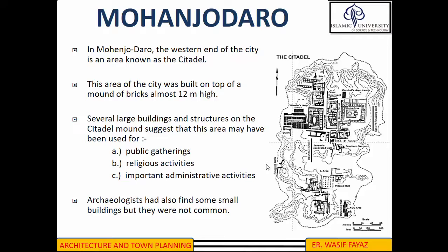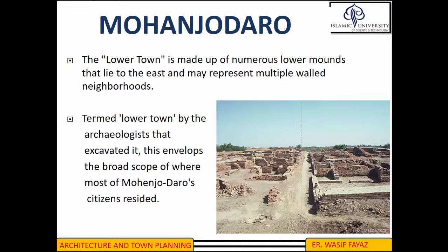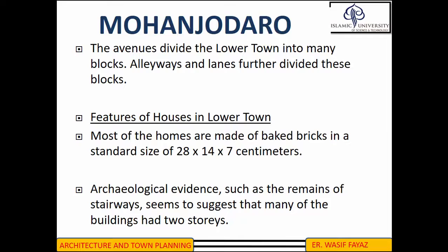Archaeologists have also unearthed some small buildings, although they were not common. The Lower Town of Mohenjo-daro was quite large compared to the Citadel, made of numerous lower mounds to the east that may have represented multiple walled neighborhoods. It was the place where most citizens resided. Various avenues divided the Lower Town into many blocks, and alleys and lanes further divided these blocks.